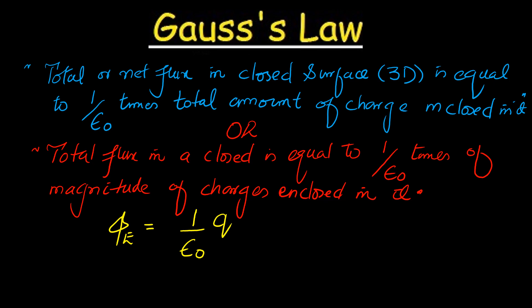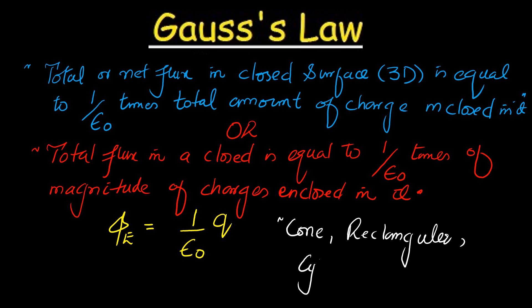Students, please note that the surface could be of different types. There could be a cone, a rectangular surface, or a cylindrical surface. In all those types of surfaces, if a charge Q naught is present inside, then the net amount of electric flux at the surface of these 3D surfaces will be 1 over epsilon naught times Q naught enclosed in them.